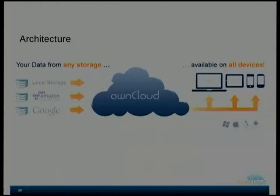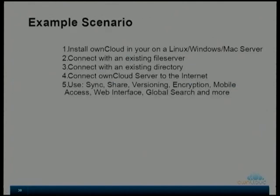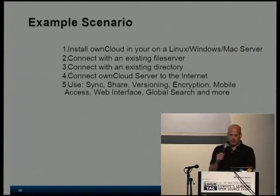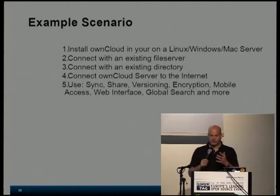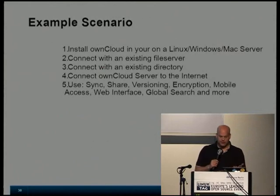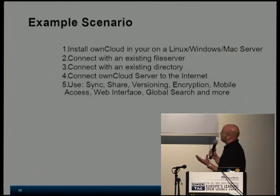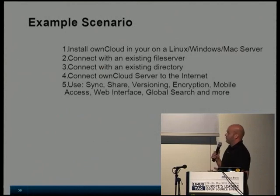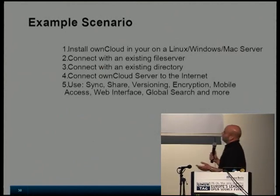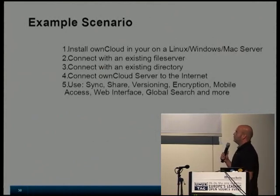We support different storage backends: local storage obviously, but also Amazon S3, Google Drive, or Dropbox — you can mount these into your OwnCloud and access it from all kinds of devices. A common use case is if you have an existing Samba server or NAS, you can just download OwnCloud, install it additionally to your existing device, connect it, and connect it to an LDAP server for single sign-on. Then you have all the nice sharing and syncing features.